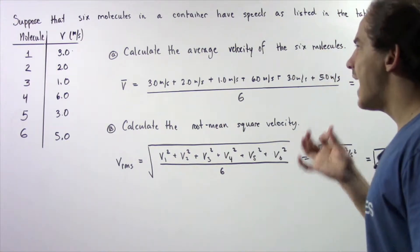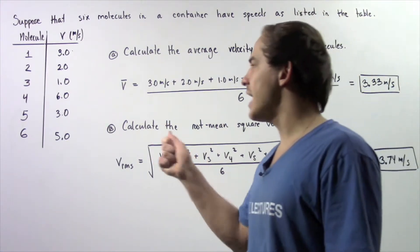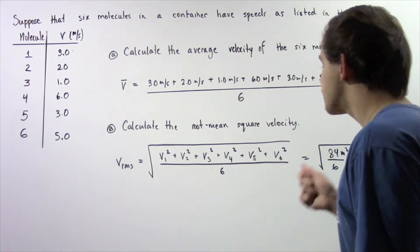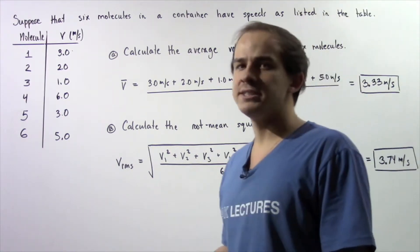So in part A, calculate the average velocity of the six molecules and in part B, calculate the root mean square velocity of the six molecules in our container.